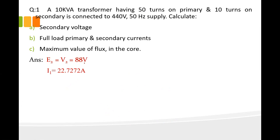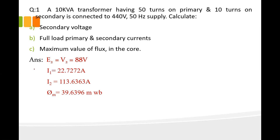V2 is 88 volts. The answers are: I1 = 22.72 A, I2 = 113.63 A, and the maximum value of flux φM = 39.6396 milliwebers. You can verify these answers.